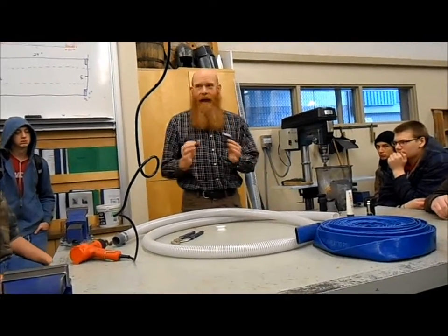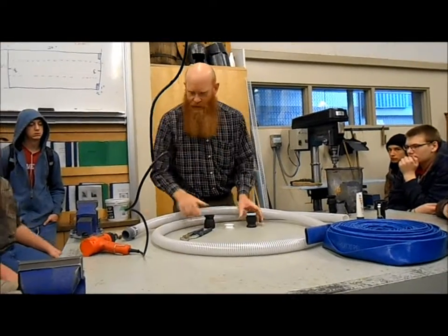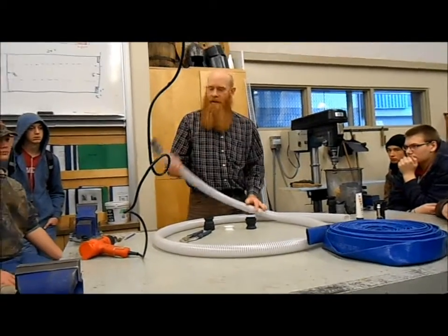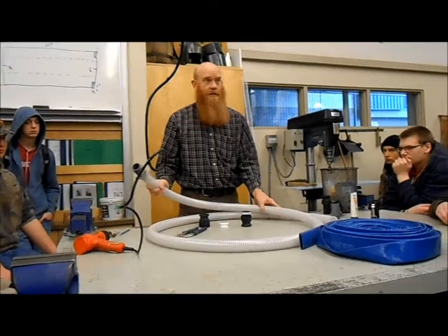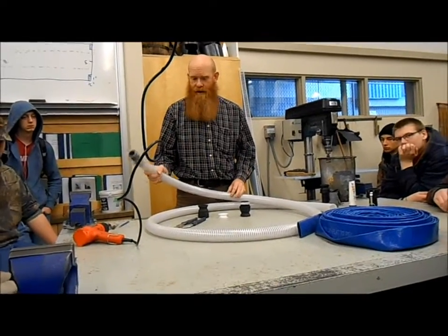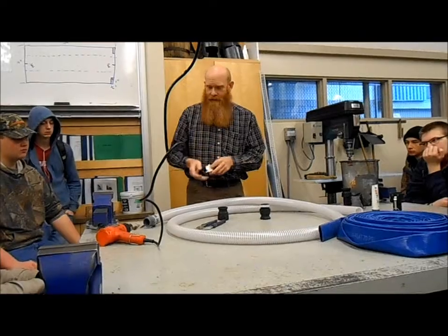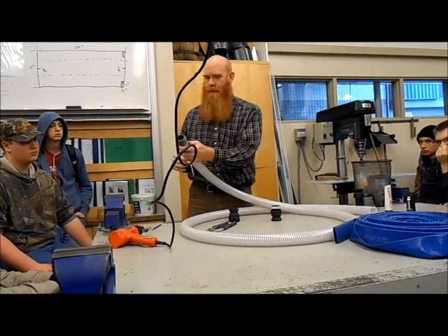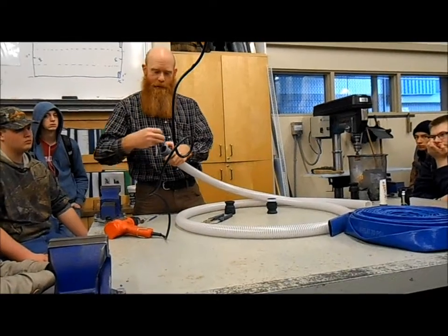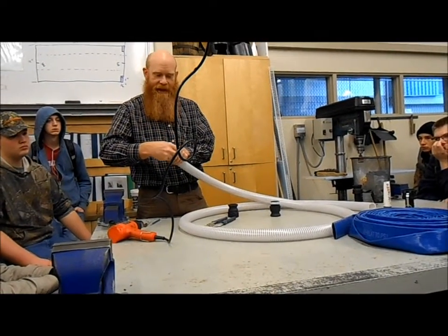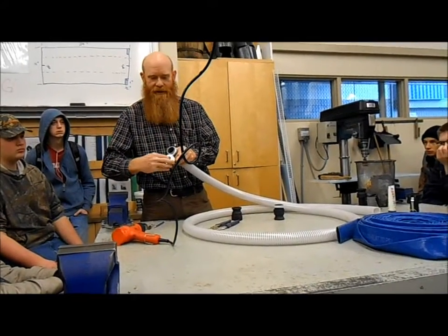So on the suction side, we have to Teflon tape every one of our joints. This here is a suction hose that we're just creating to run the high banker over there. We have to add a few fittings. I've already put one hose barb in here with a pipe thread on the end. I can now put the Teflon tape around it, and it's actually important which direction you spin this Teflon tape.